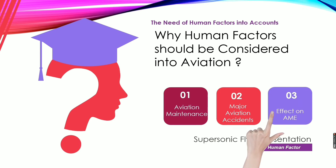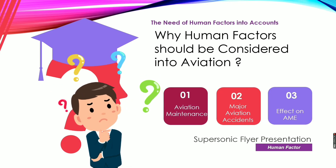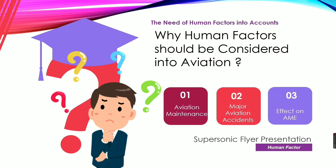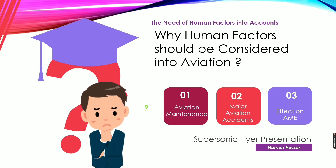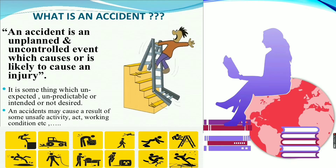It is universally agreed that at least 80 percent of maintenance-related incidents involve human factors. If they are not prevented and the causes are not detected, they can cause injuries, wasted time, and even accidents. So let's look at what an accident is.